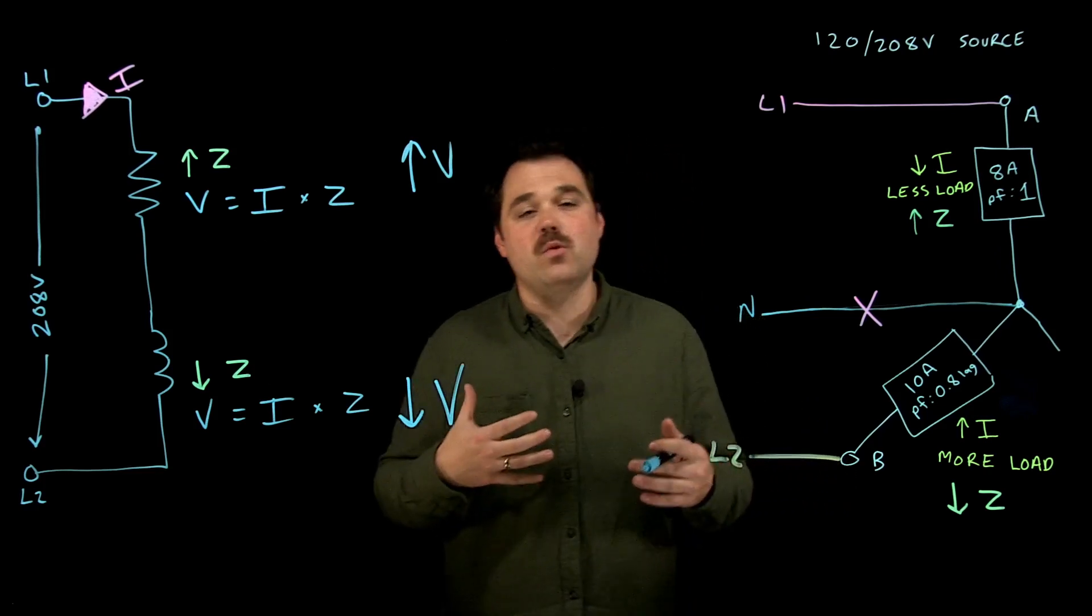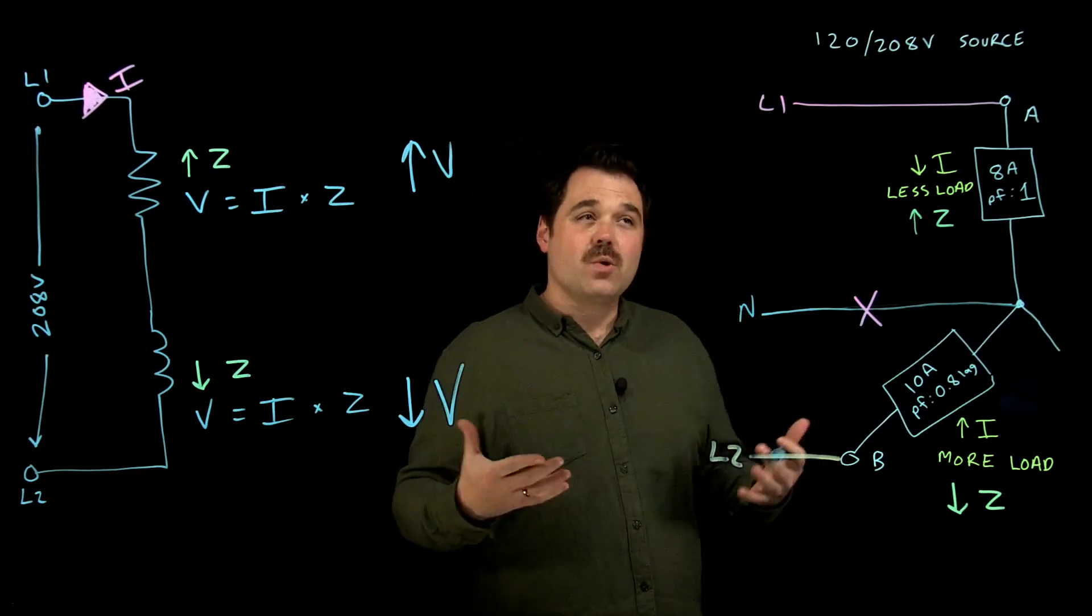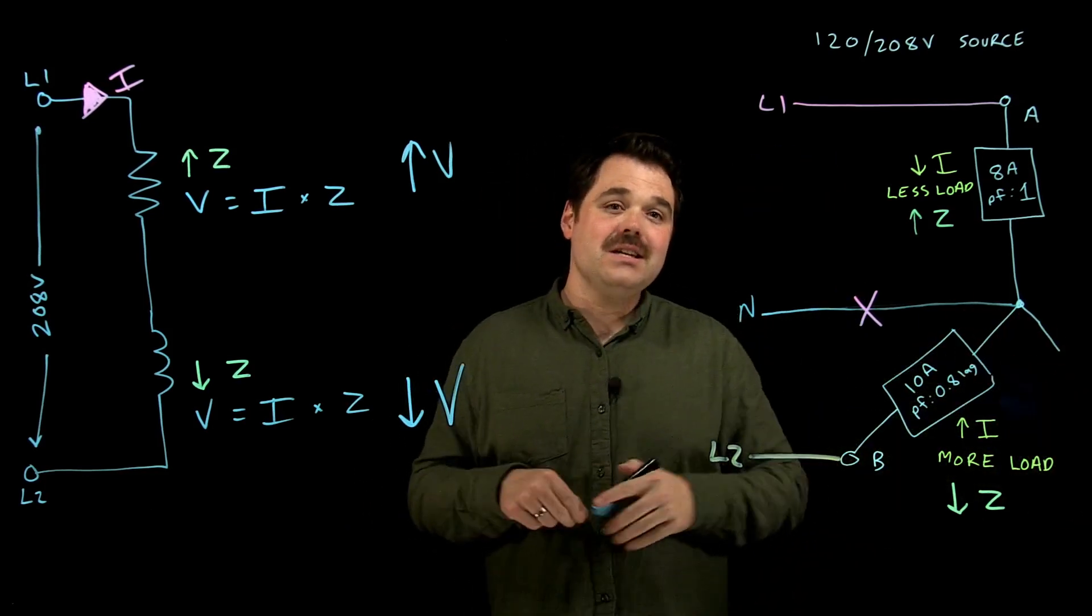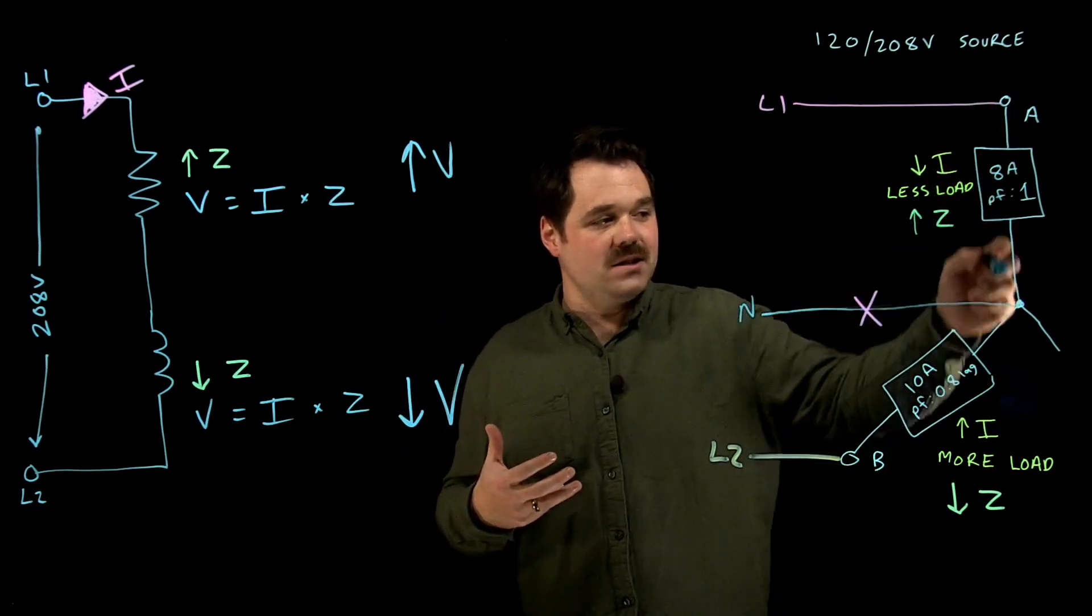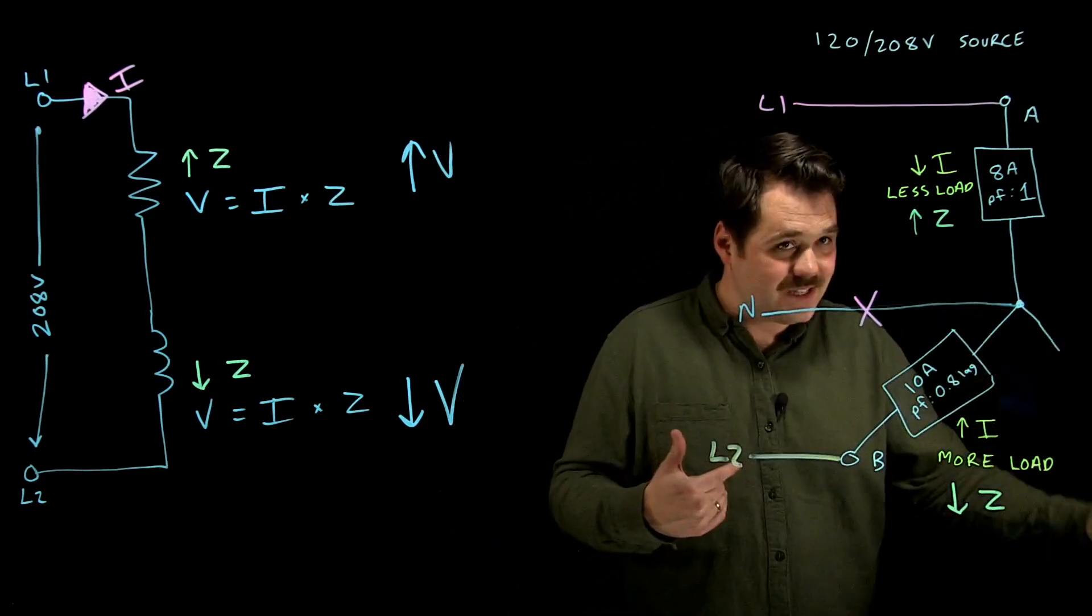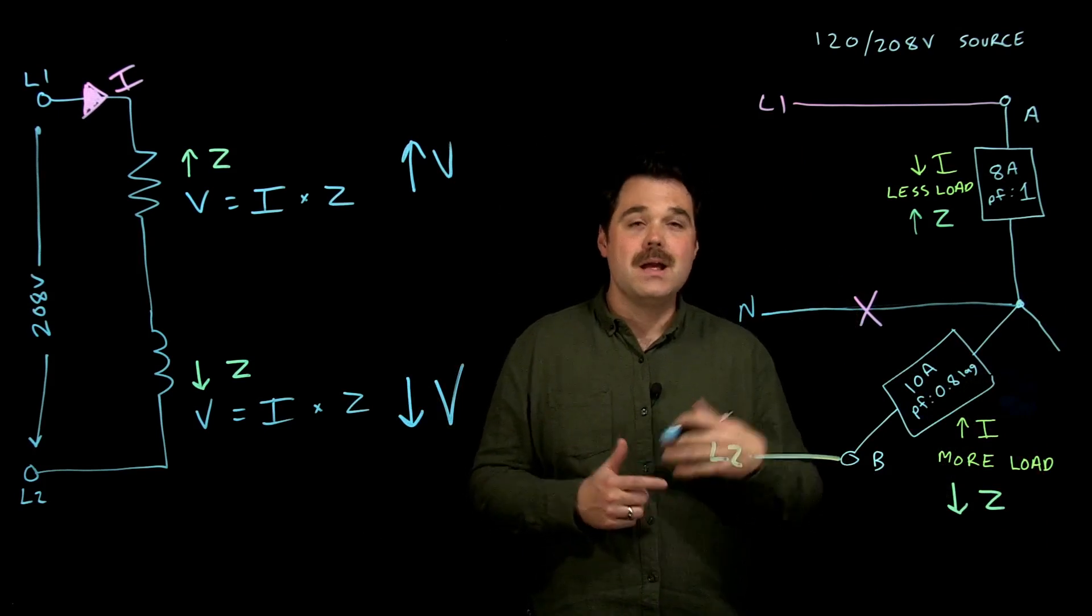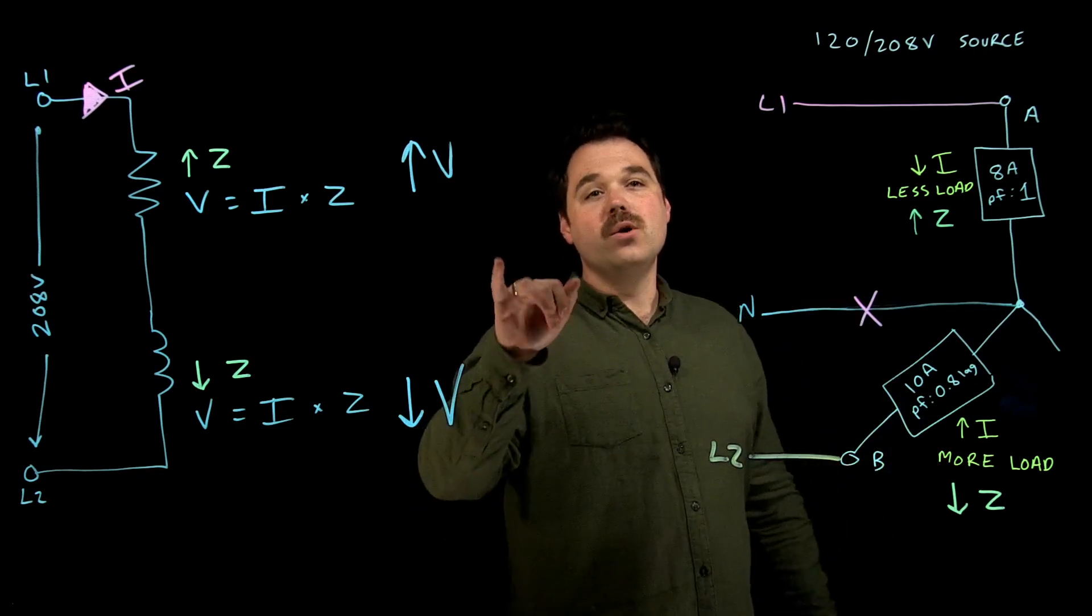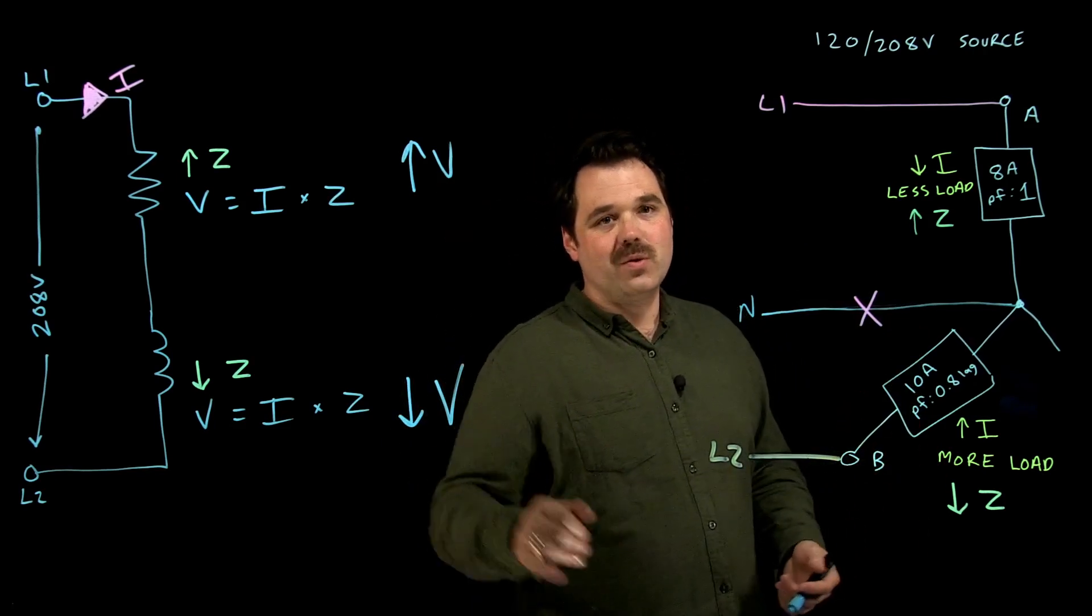So I do hope that clears up some questions about what happens when we do see a neutral conductor break. Of course, in this example talking about a three-phase source, we didn't discuss anything on phase C, but the same rules would apply. You would have phase A and phase C in series with 208, you would have phase B and phase C in series between line two and line three. But those general rules still apply: higher impedance load, higher voltage drop; lower impedance load, lower voltage drop.